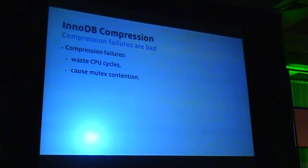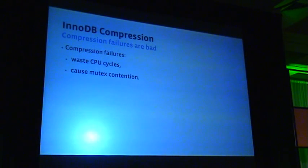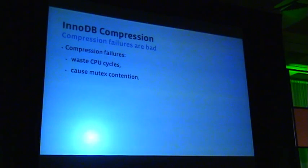Compression failures are bad. When a page fails to compress, all the time spent trying to compress that page is wasted. If we had a way to know that a page would not be compressible, we wouldn't attempt compression in the first place. This would save precious CPU cycles, and importantly, it wastes those cycles while important mutexes are held.